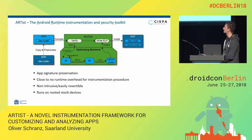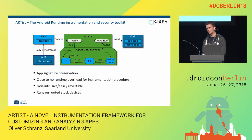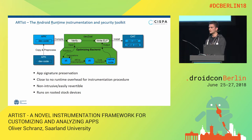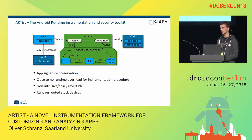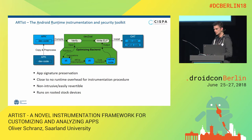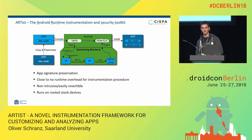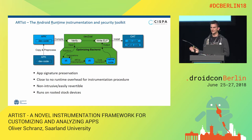We can change the code at will and do anything. The good thing is that we're completely platform independent because this happens before the code generators kick in and generate native code — so this works out of the box for all hardware platforms for Android. We also have close to no runtime overhead because we don't have any expensive hooking like Xposed. We just do this in the compiler, it's a compiled app, and then we're done.